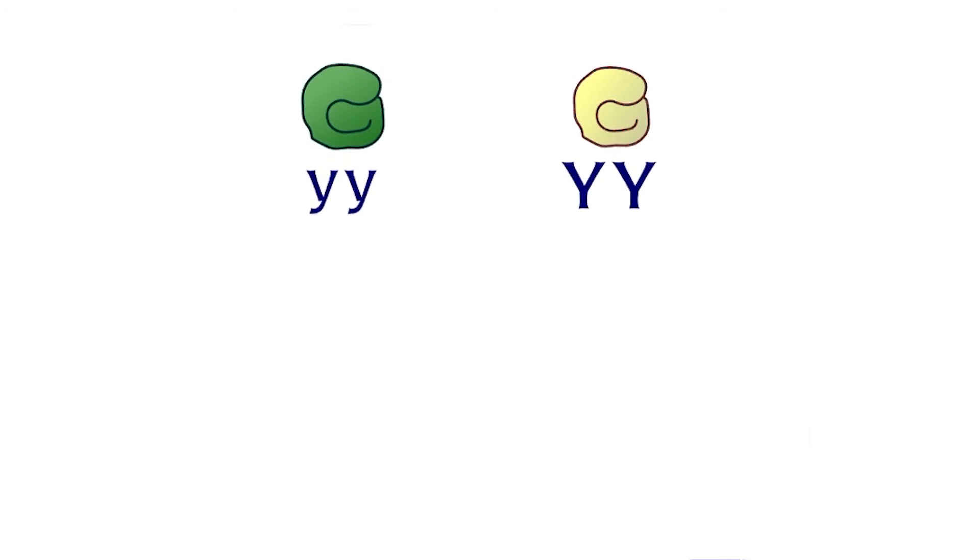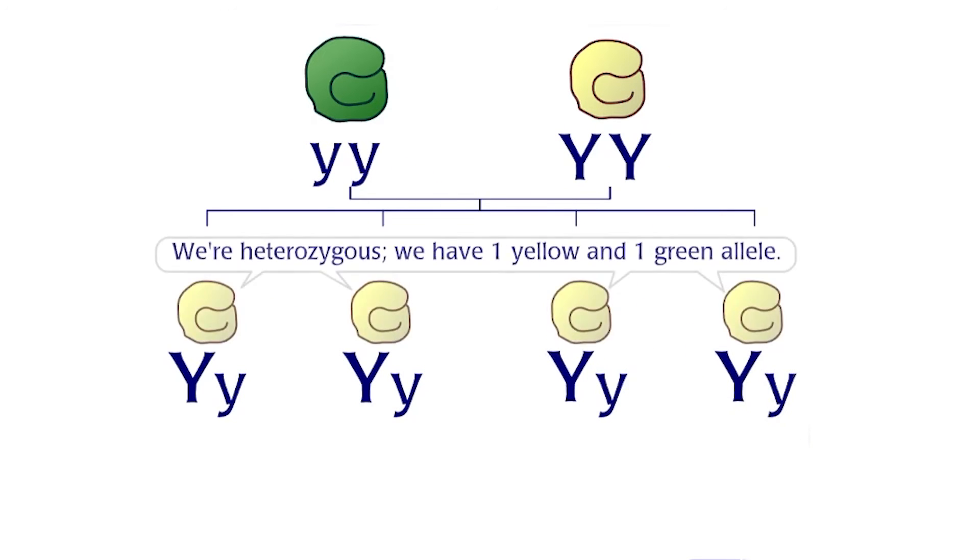When pure green is crossed with pure yellow, the offspring inherit one allele of the color gene from each parent. Plants with two different alleles of a gene are heterozygous. As all heterozygous plants are yellow, the yellow allele must be dominant over the recessive green allele.